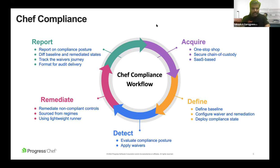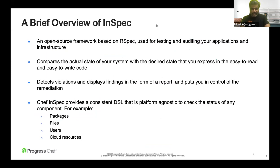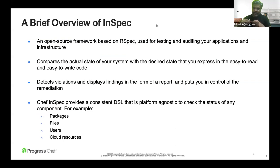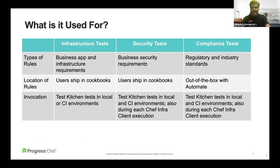InSpec is basically used to test and audit applications and infrastructure. It is based on the RSpec framework — a Ruby framework. It compares the actual state of the system versus the desired state by means of controls written in Ruby code, and it assimilates findings in audit reports. InSpec also has flexibility to test any resources, be it packages, files, or cloud resources.